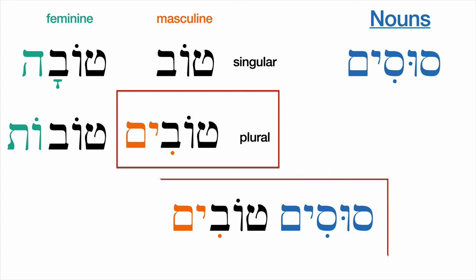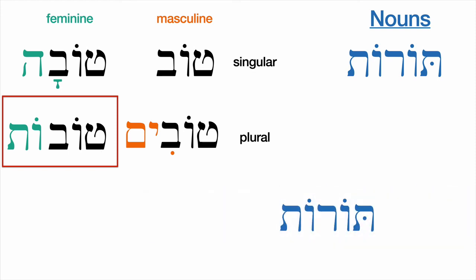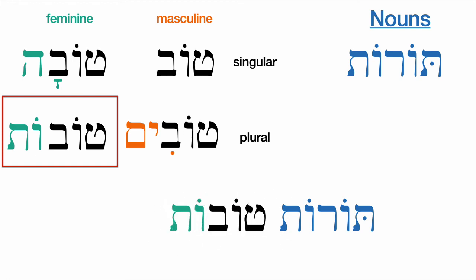Finally, rather than doing susot, let's do torot — the plural of Torah. Torot would be laws or instructions; it's feminine and plural. So we want the feminine plural form of tov, which is tovot. If we wanted to say good instructions: torot tovot — good instructions, good laws, good teachings.